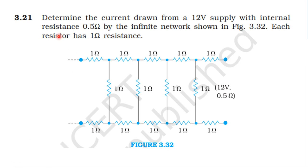From the register book, topic current electricity, exercise 3.21: determine the current drawn from a 12 volt supply with internal resistance of 0.5 ohm by the infinite network shown in the figure. Each resistor has 1 ohm resistance.